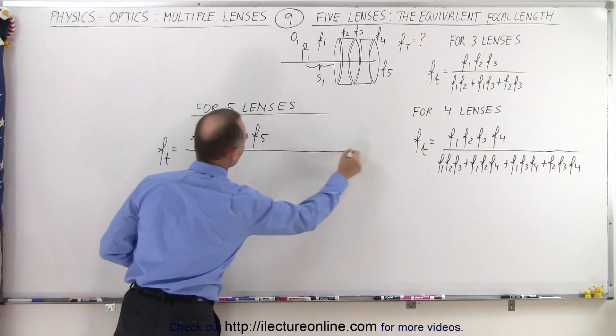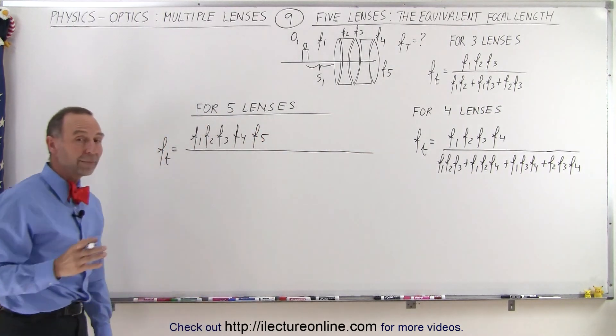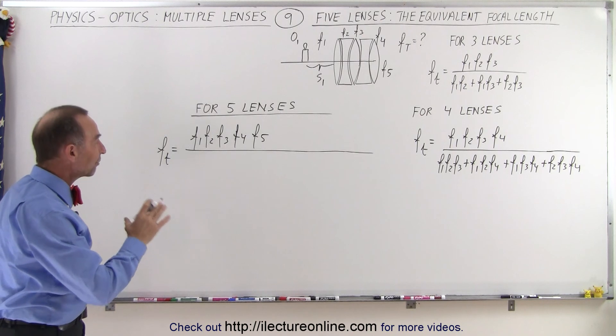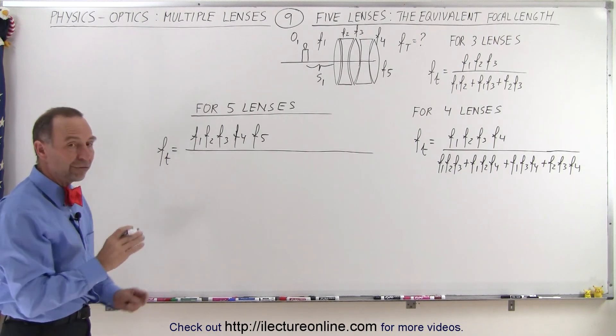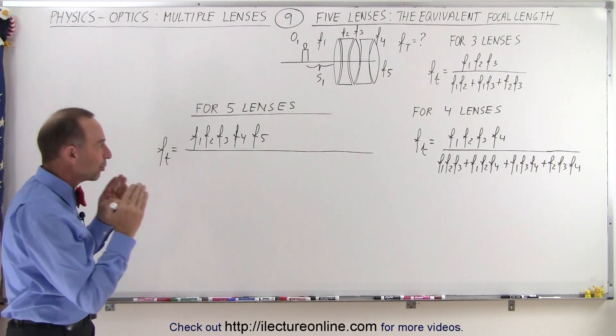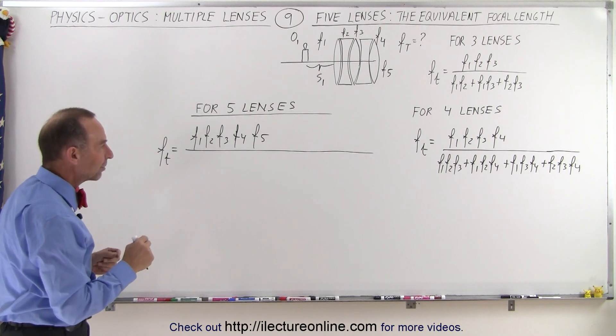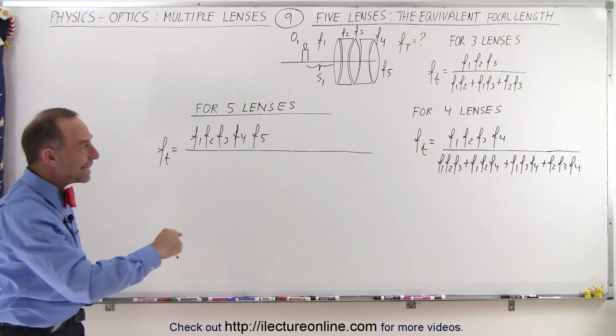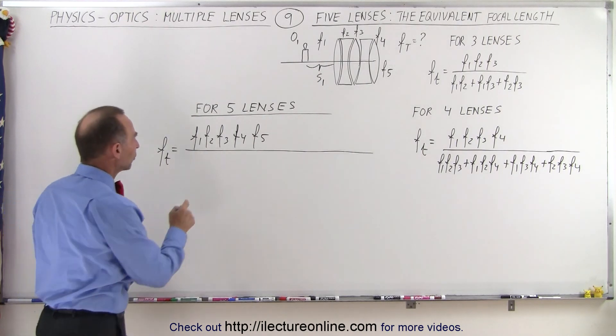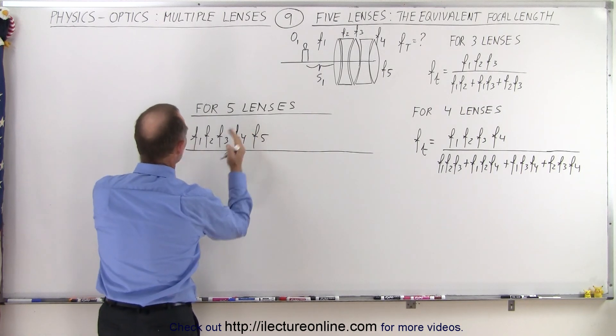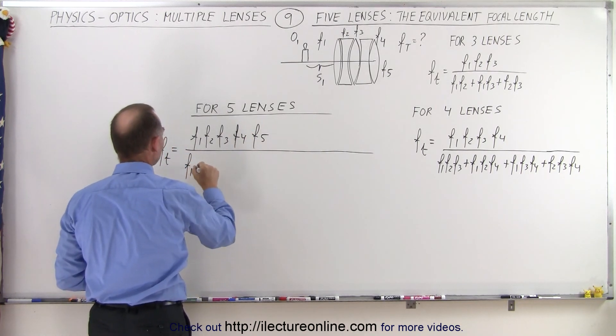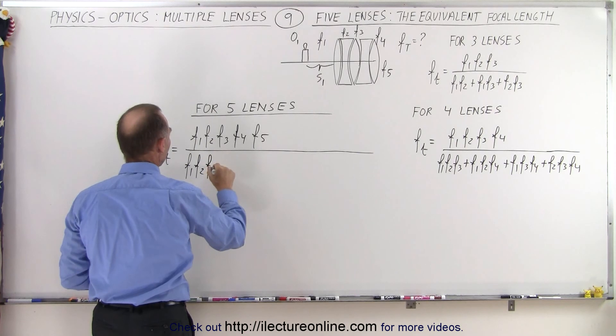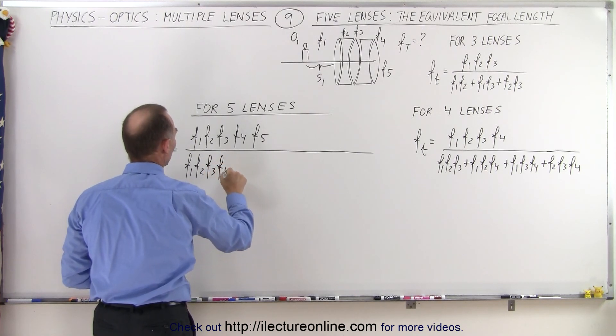The focal lengths all multiplied together. Now in the denominator, we're going to end up with five terms. Each of the five terms will only have the product of four of the focal lengths and we're not going to have any repeating combinations. So we're going to start out with the first four right here. So we have F1, F2, F3, and F4 plus.